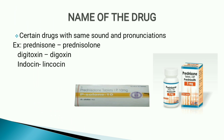Since prednisone is a pro-drug, once it enters the body it goes to the liver to be metabolized. This can be a problem in liver disease, so prednisolone, which is already the active metabolite, is used instead to avoid burdening the liver. Next one is the strength of preparations.